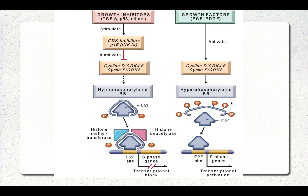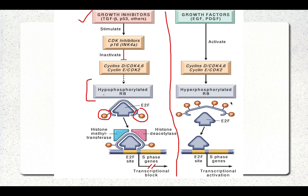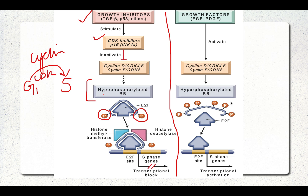The molecular basis of the RB gene: normally, when there is no cellular proliferation, the RB gene is in a hypo-phosphorylated form. CDK inhibitors inhibit cyclins and keep RB in this hypo-phosphorylated form. In this state, the E2F transcription factor is not released, so transcription in the nucleus does not take place.